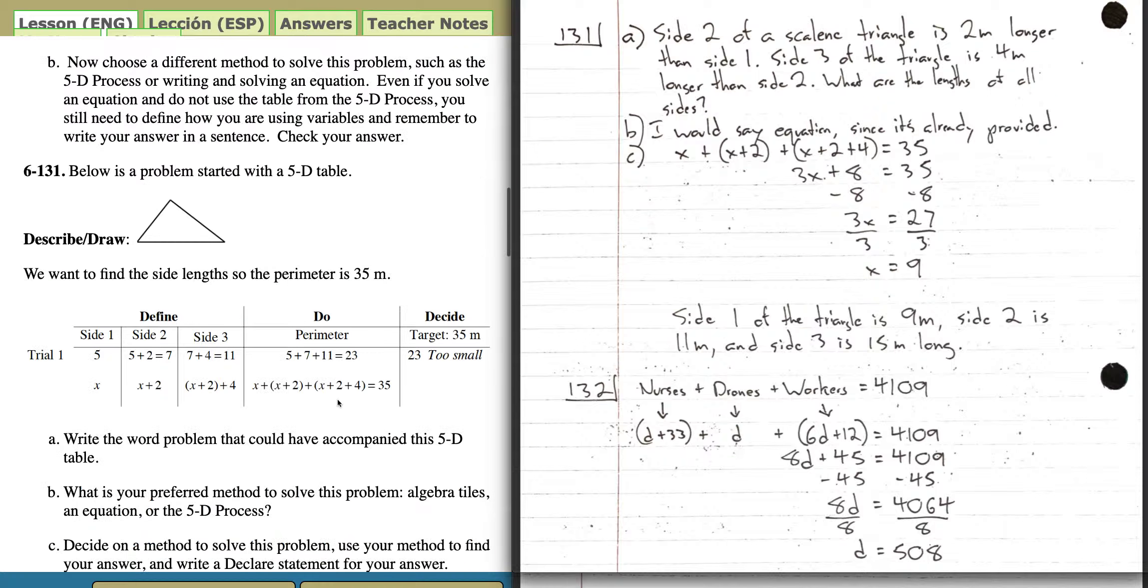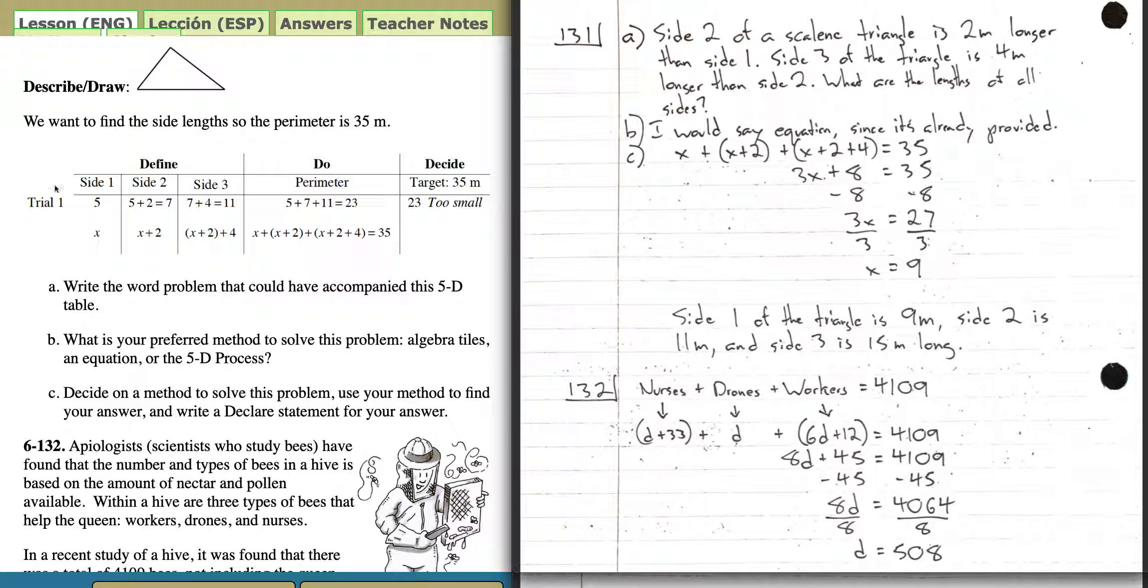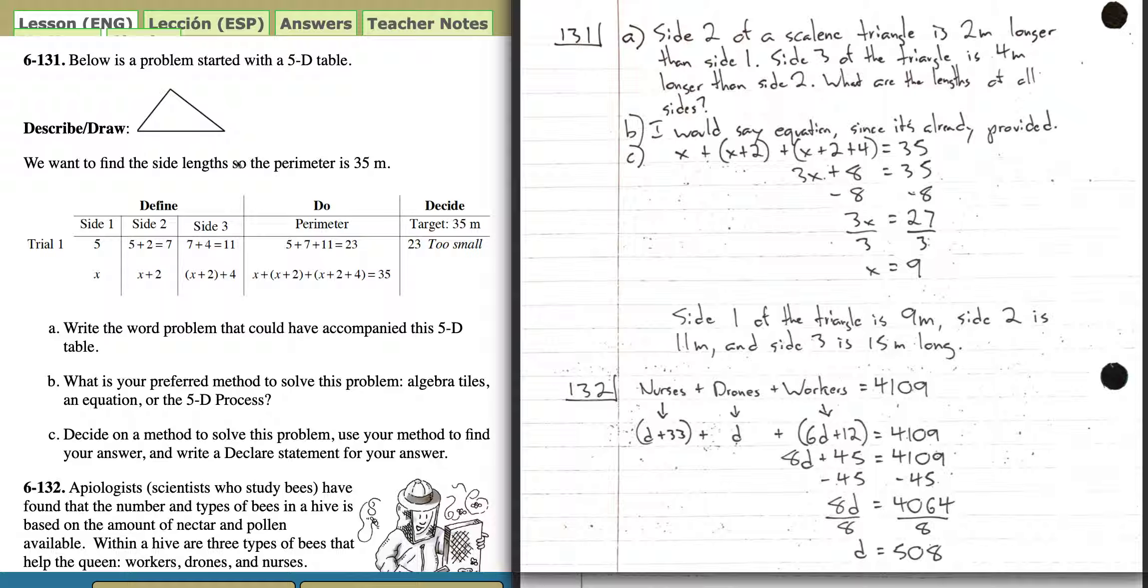Moving on to 6.131. Write the word problem that could have accompanied this 5D table. I'm seeing a triangle, all the sides are different, we want to find the side lengths. I kind of used this to write my word problem. I said, side 2 of a scalene triangle is 2 meters longer than side 1, because side 2 is plus 2. Side 3 of the triangle is 4 meters longer than side 2. What are the lengths of all the sides? What's your preferred method? I said it's an equation, especially since it's already here. They already gave it to us, so we just have to solve it.